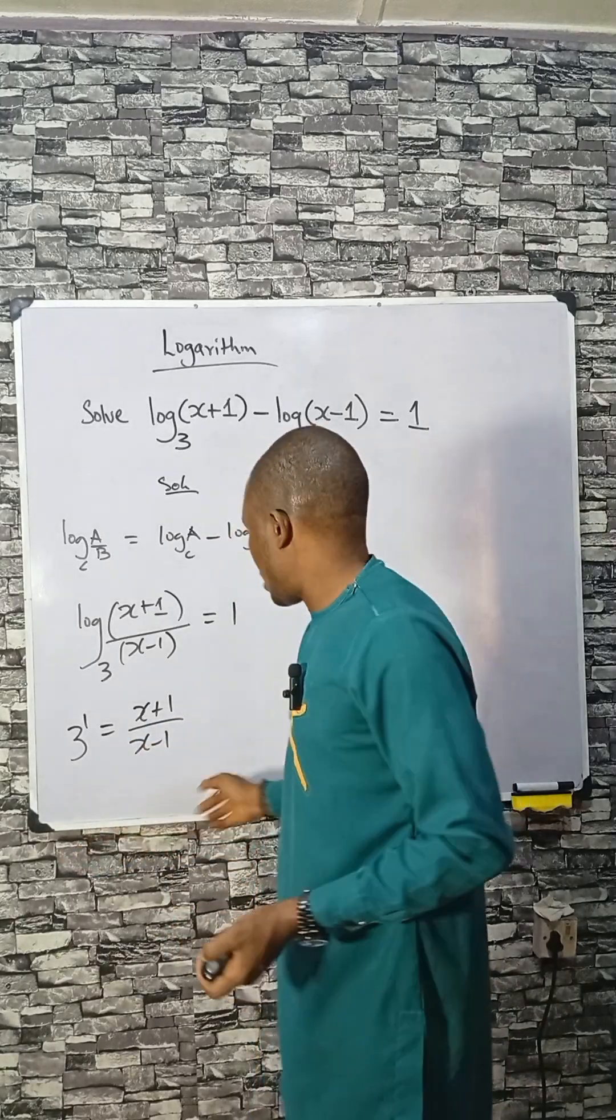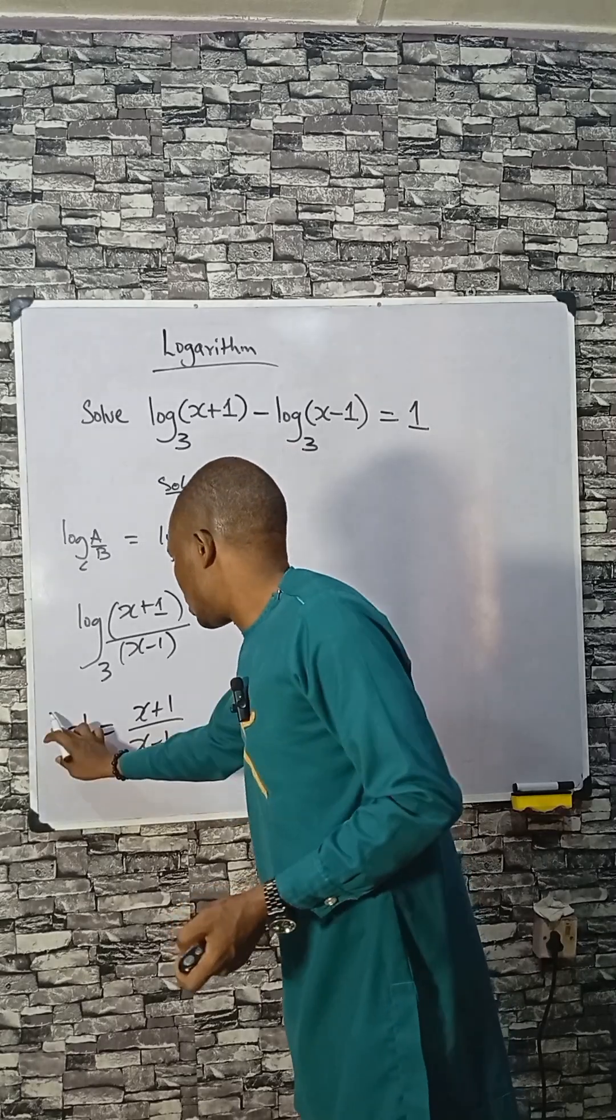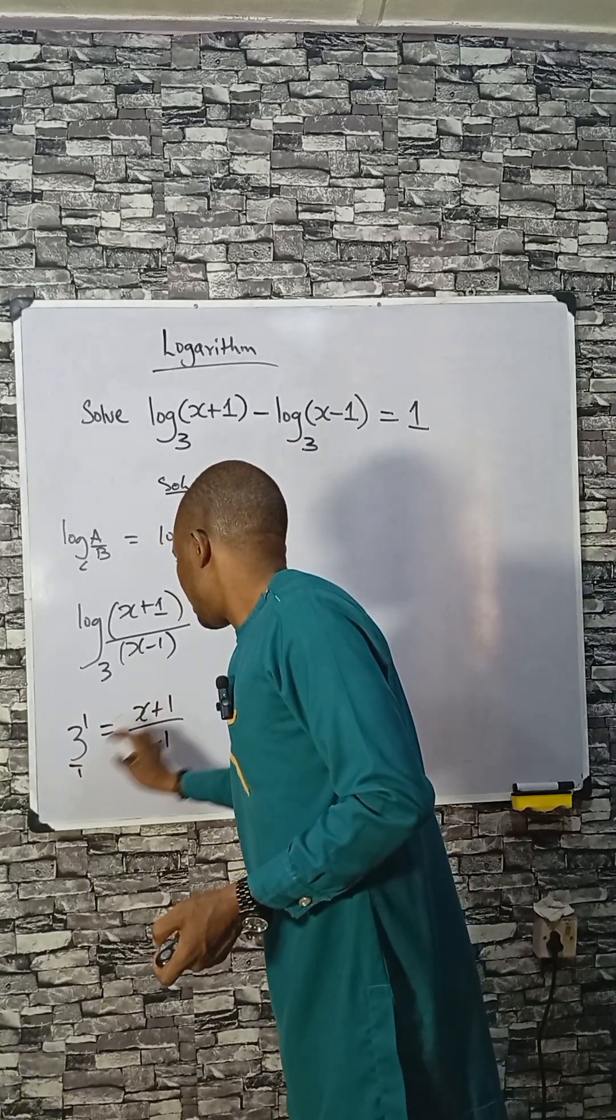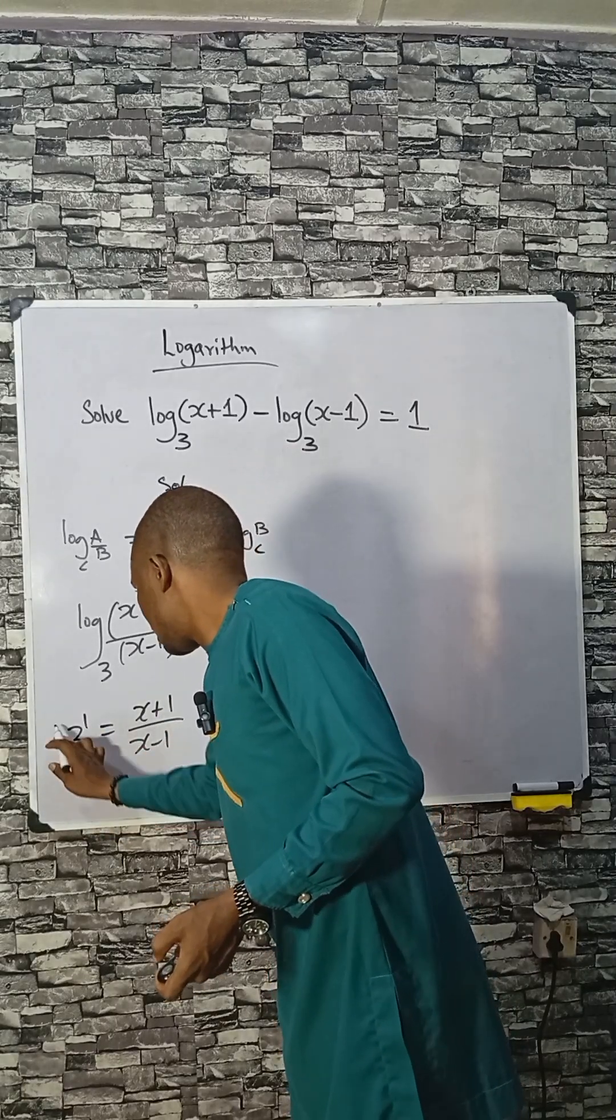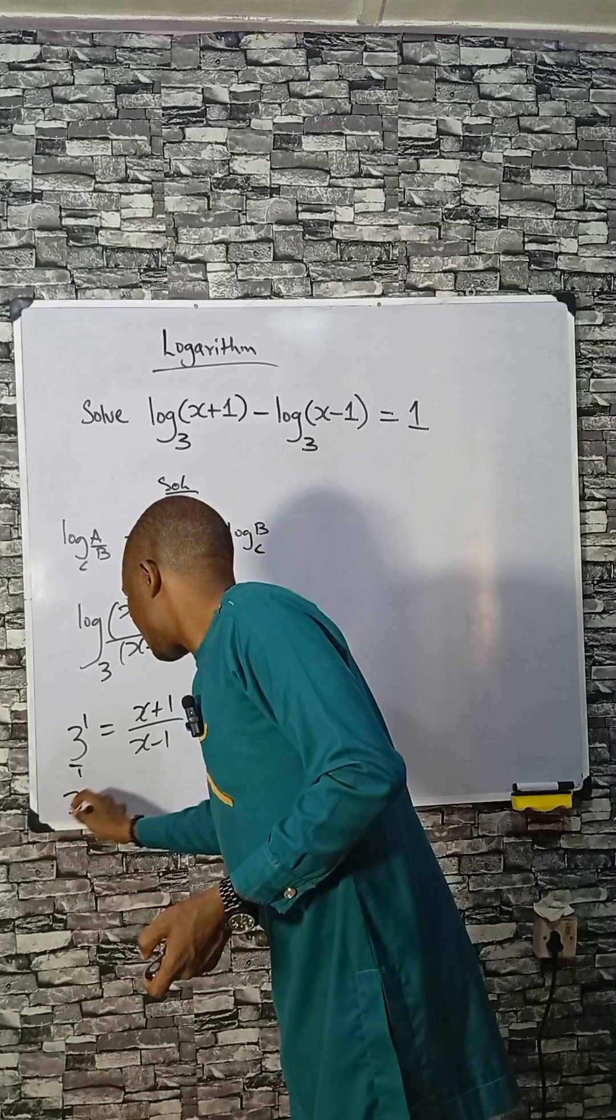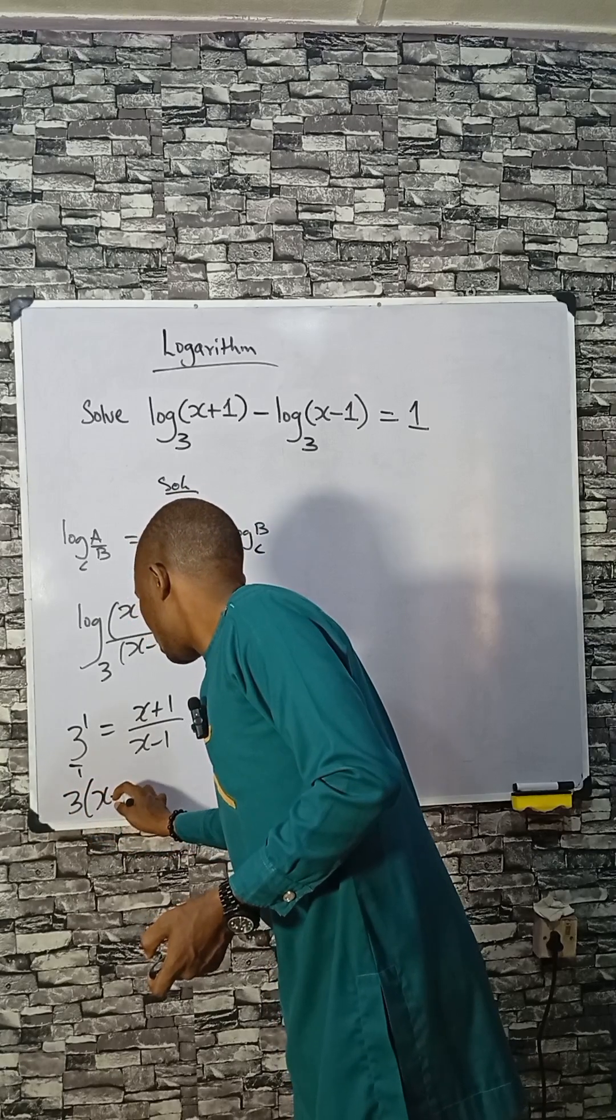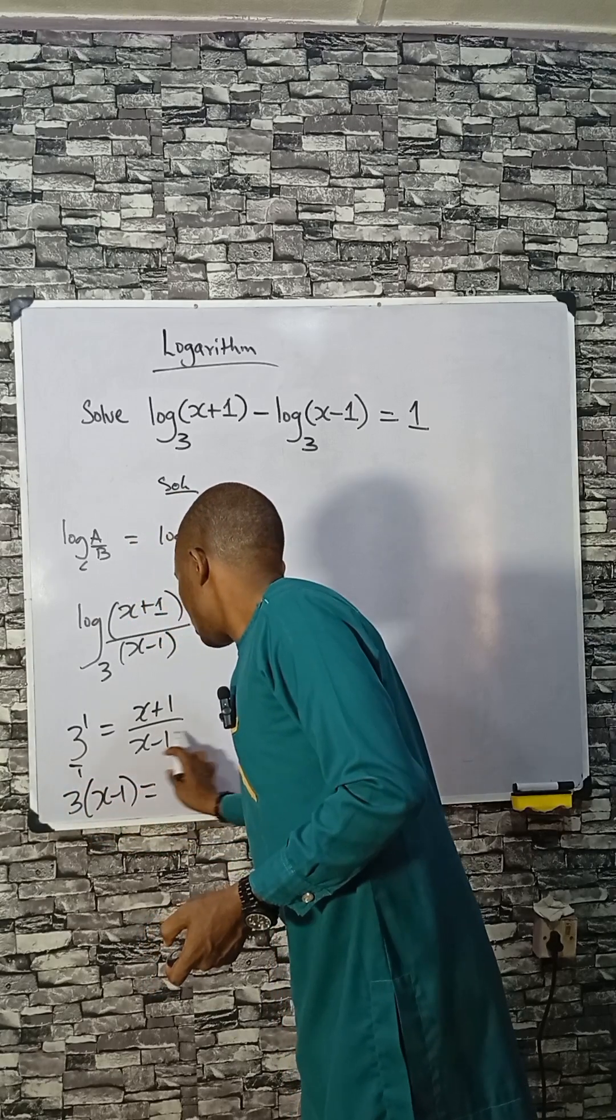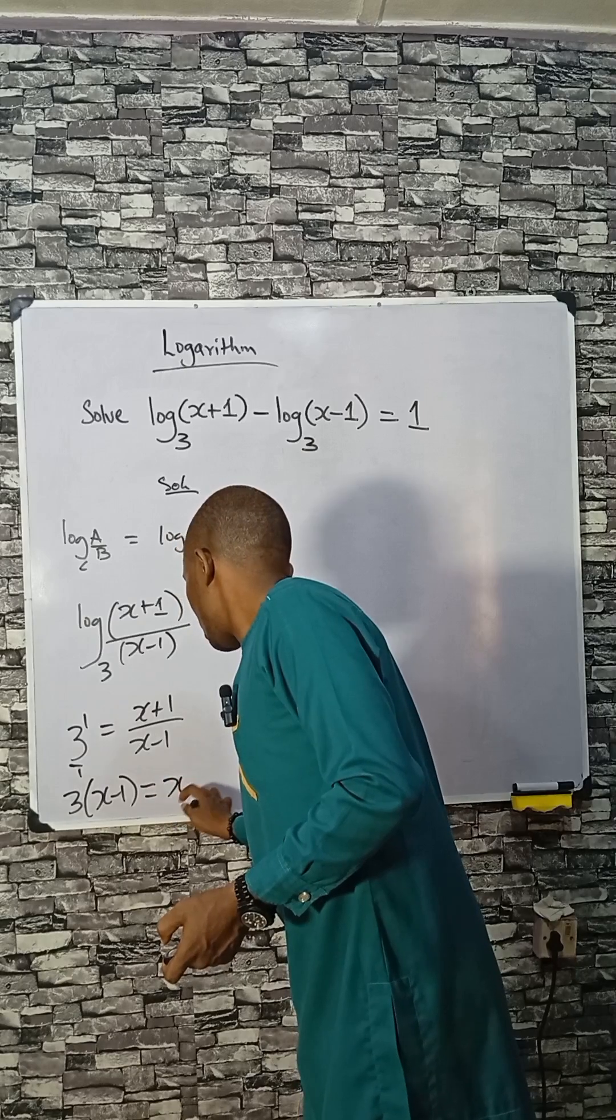If I decide to cross multiply, so we have this multiply this and this multiply 1. So we have 3 times (x-1) equals (x+1).